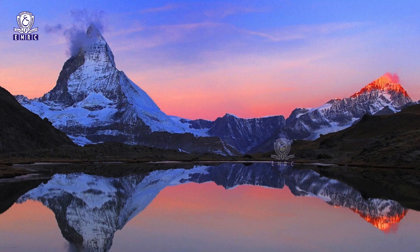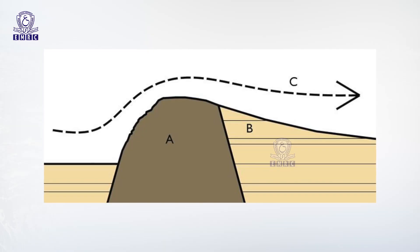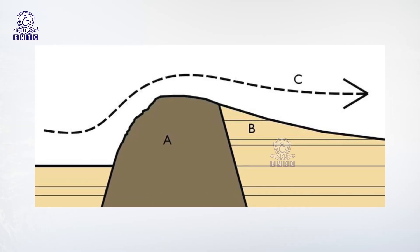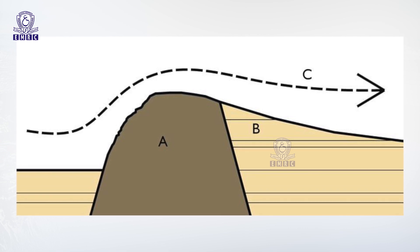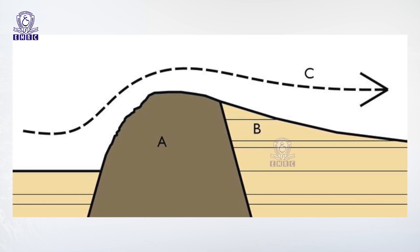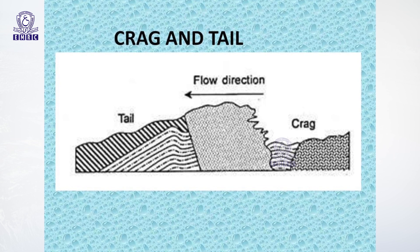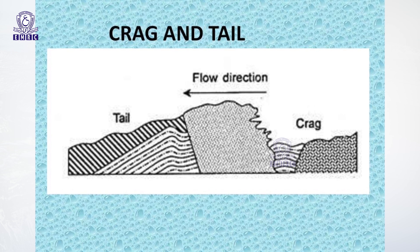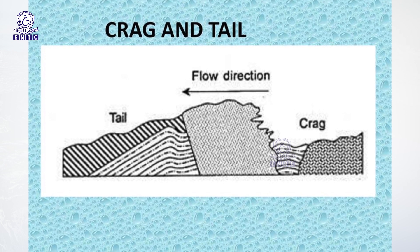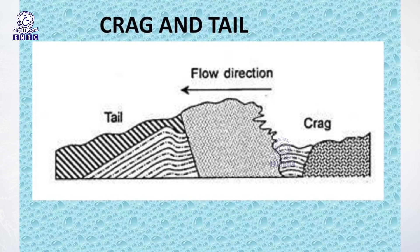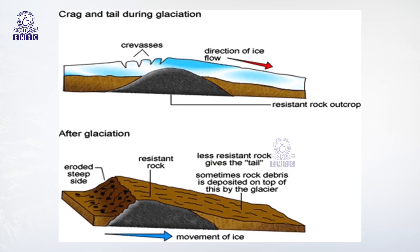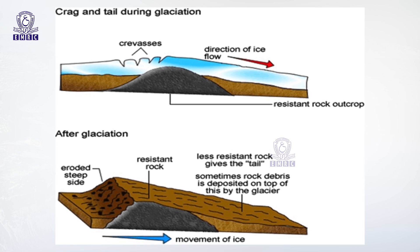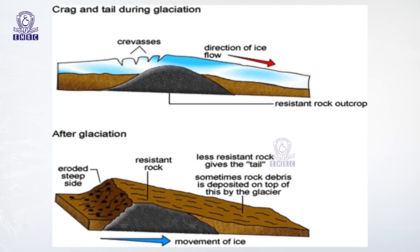Crag and Tail: Crag and Tail is a landform associated with a volcanic or basaltic plug projected above the ground surface. It has a vertical, eroded, steep up-glacier side and a tail-like appearance with lower height on the down-glacier side. The volcanic plug offers resistance to the glacier's flow, so the side facing the incoming glacier becomes steep due to erosion and is called the crag. The other side, sheltered by the glacial ice, becomes elongated with a gentle slope and appears like a tail.